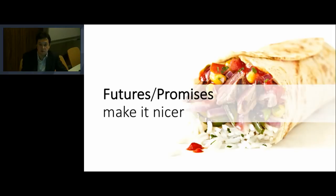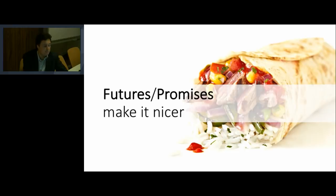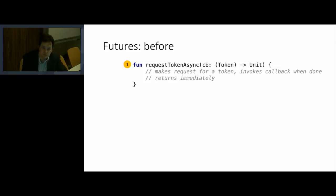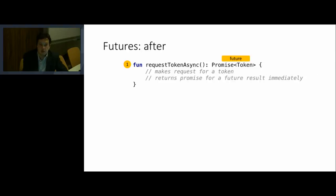Quite a long time ago, people invented a solution that goes under different names — it's called futures, promises, and tasks. Futures and promises are the two most common names for the concept. Instead of taking an additional callback parameter into a function, the idea is to encapsulate the result. Keep your functions without additional parameters, but instead of making a function wait and block execution until it's done, quickly return a future or promise of the result. Then when this future completes or resolves, you can take the next step of computation and so on.